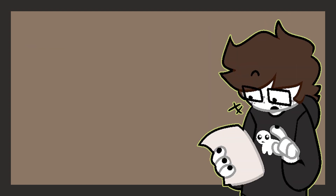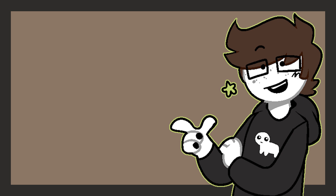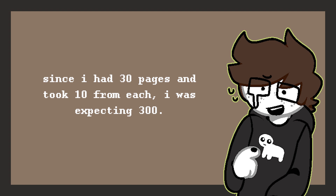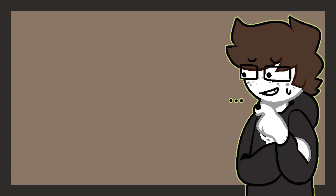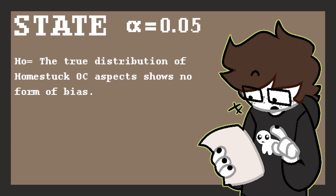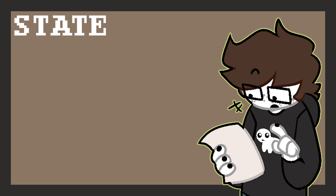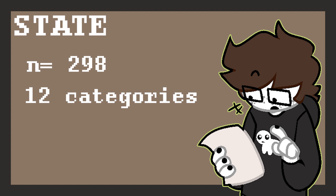After gathering all my data, I ended up with the distribution listed on the screen. Altogether, this adds up to a sample of 298. It looks like I somewhere lost two data points, but oh well — two little points won't change much seeing as I have such a big sample already. I decided to perform my test at a significance level of 0.05, with a null hypothesis of: the true distribution of Homestuck OC aspects shows no form of bias. The alternative hypothesis states: the true distribution of Homestuck OC aspects shows some form of bias. With a sample size of 298 and 12 categories, the expected values for each aspect would be 24.8 data points.